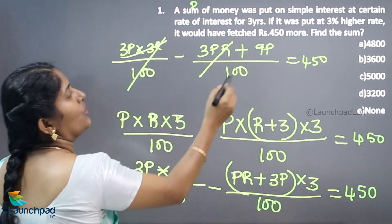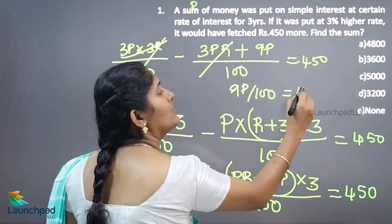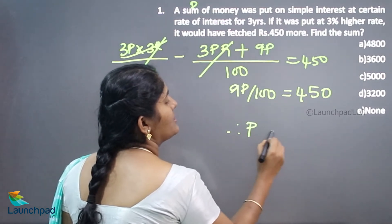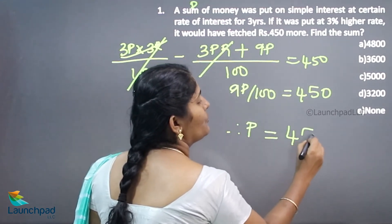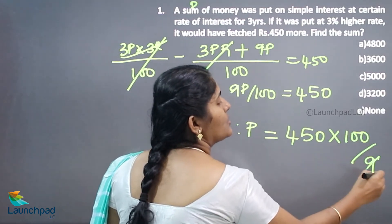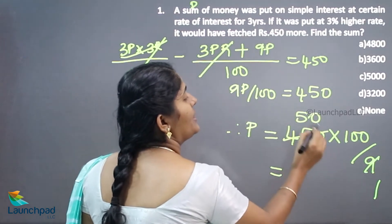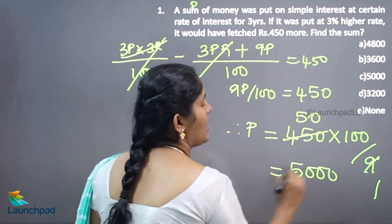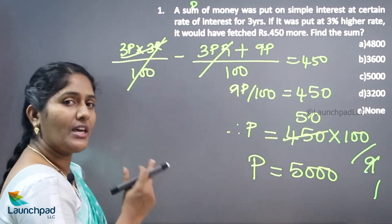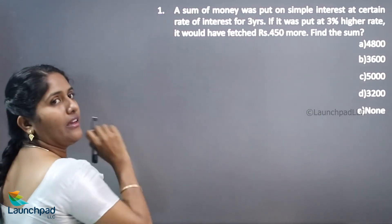So the balance is 9P divided by 100, which is equivalent to 450. Therefore P equals 450 times 100 divided by 9. That gives us 50 times 100, which is 5000. So your principal amount will be 5000 rupees.